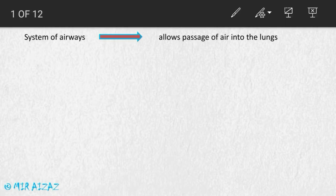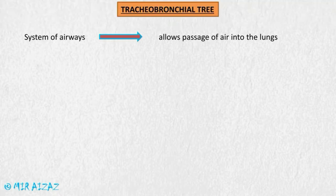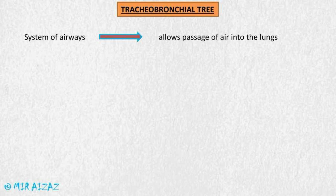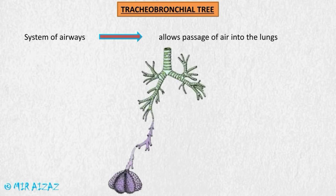Today's video is about bronchitis, but before we look into bronchitis we will first see what is the tracheobronchial tree. It is the actual system of airways which allows the passage of air into the lungs. We inhale oxygen-rich air through our nostrils or through our mouth, which then reaches into the pharynx and passes down the trachea and ultimately reaches the lungs.